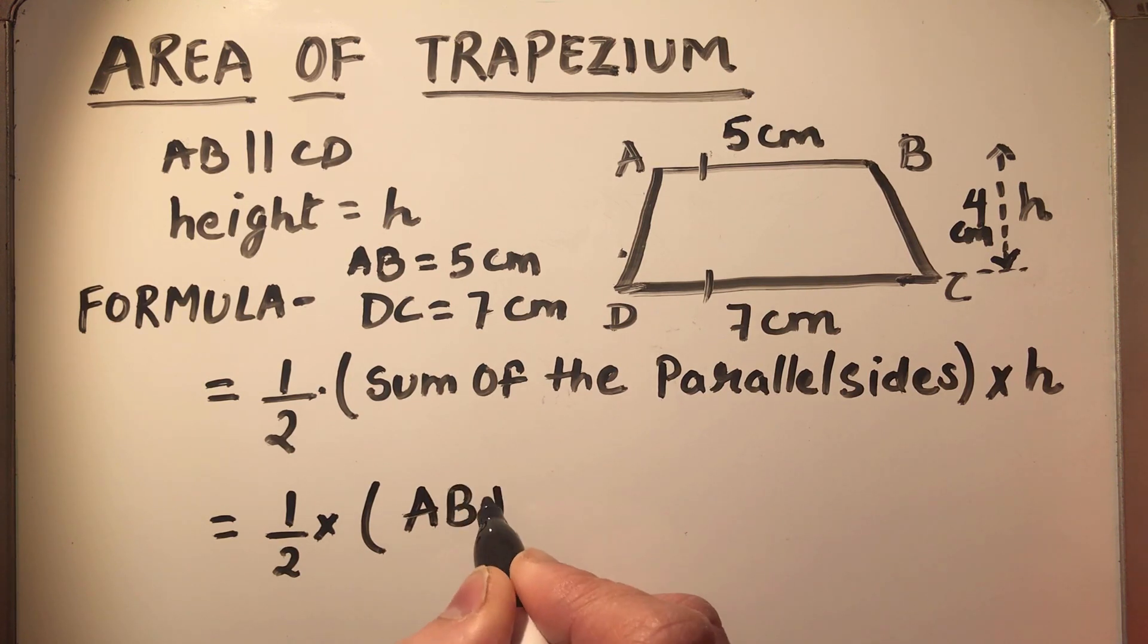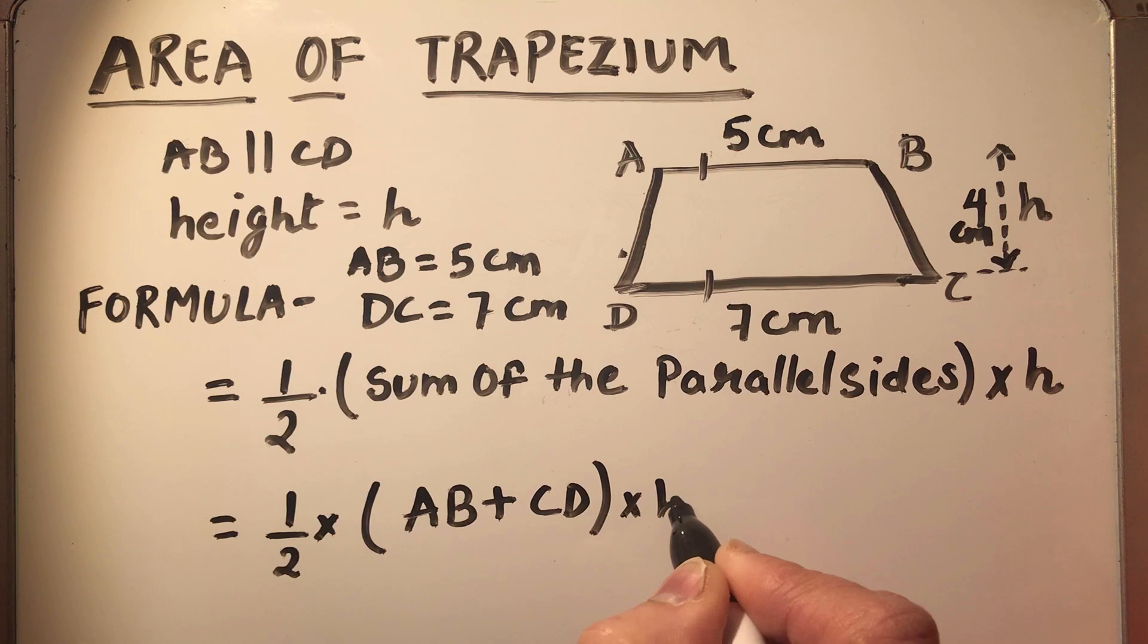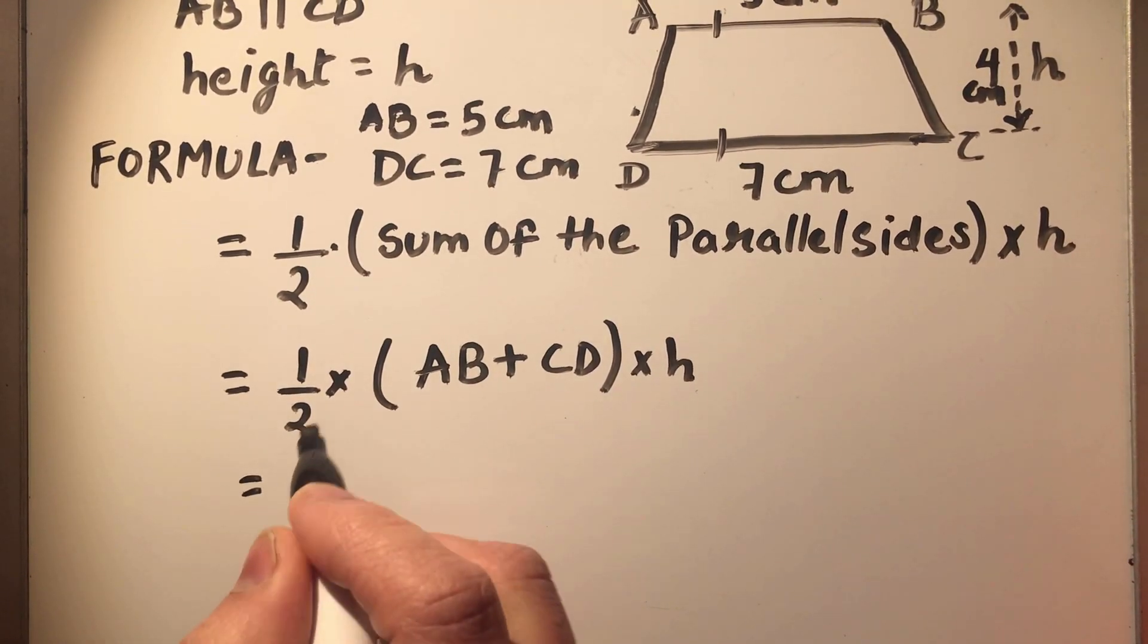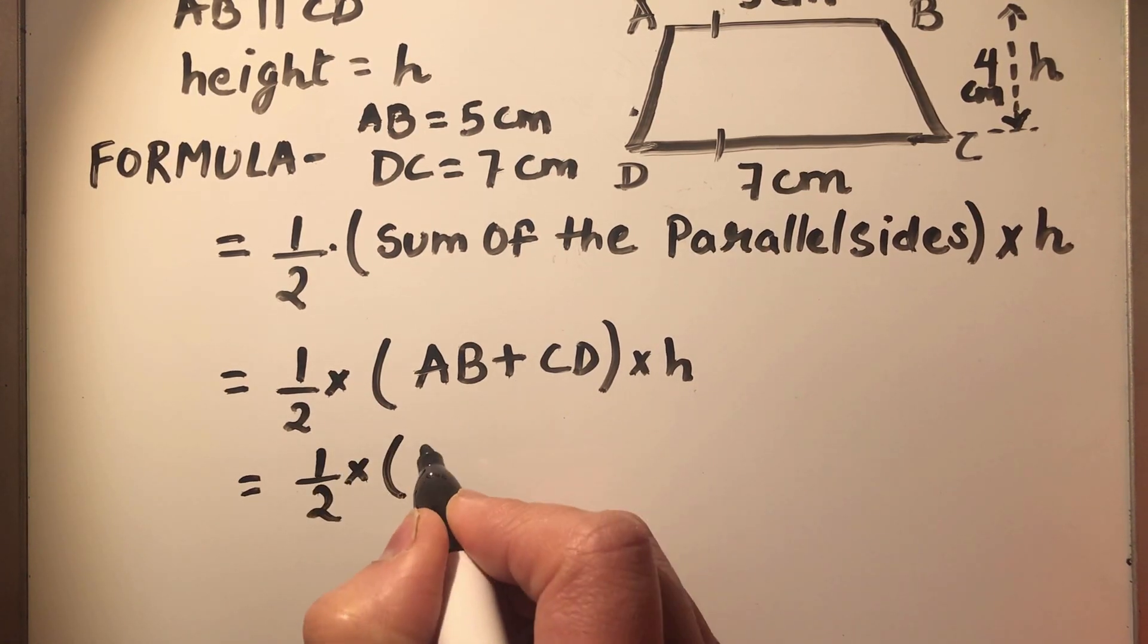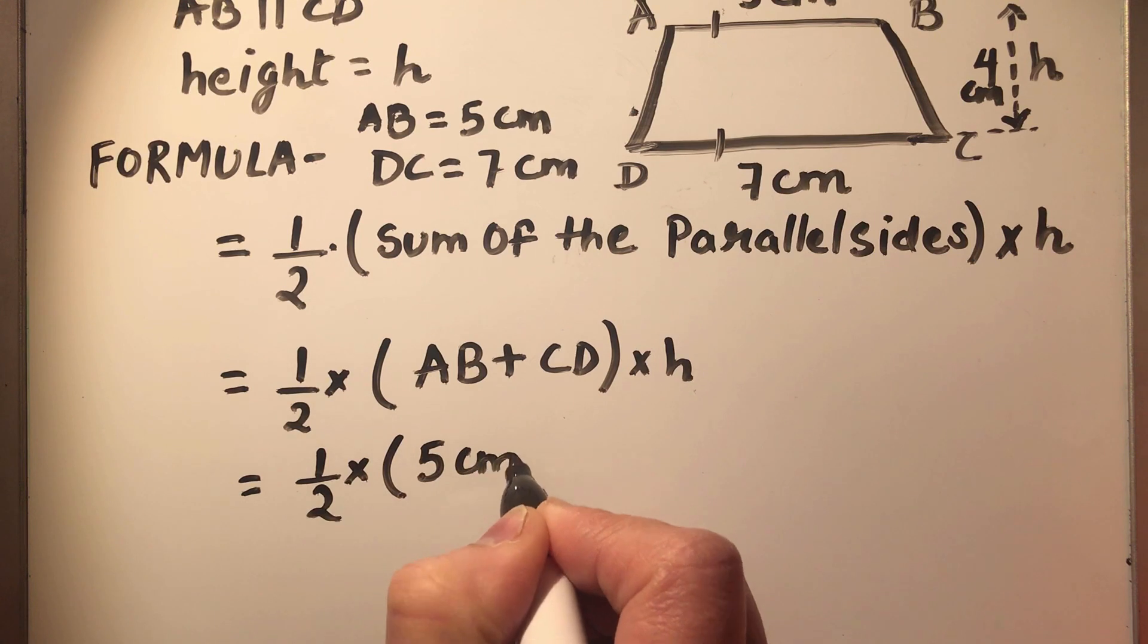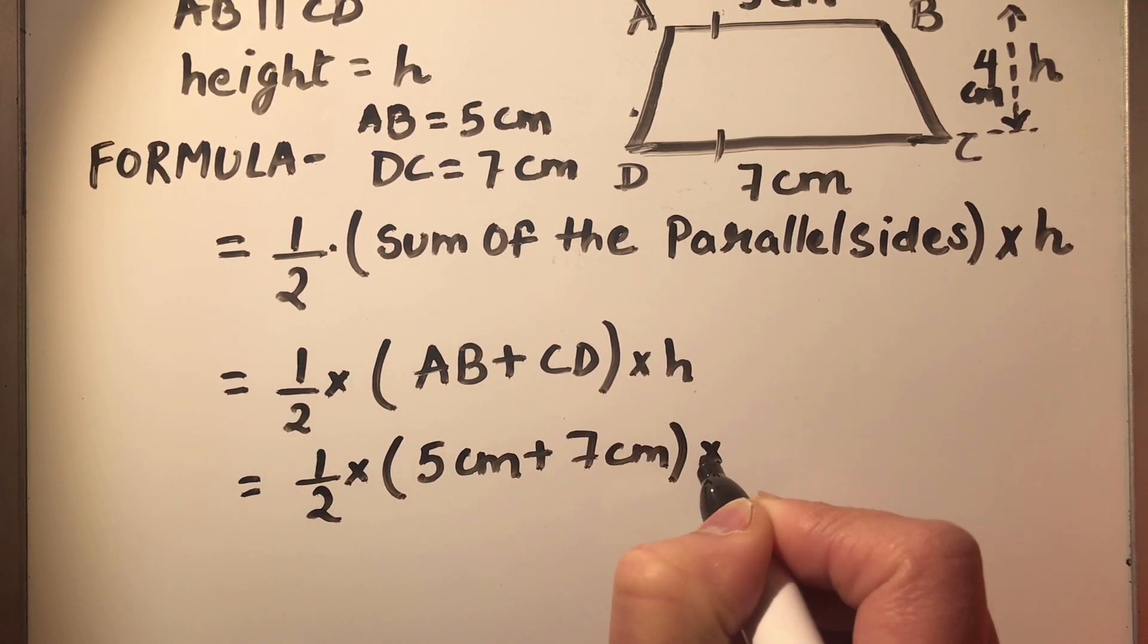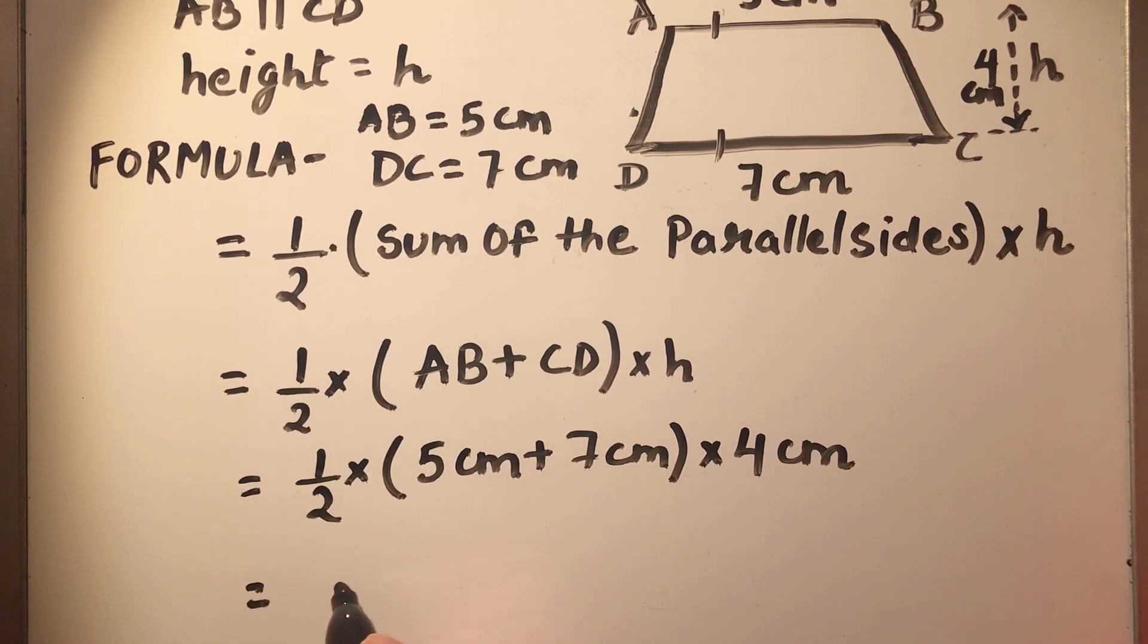Sum of the parallel sides means AB plus CD times h. So now we are going to put the values in the formula. Half times AB is 5 centimeters and CD is 7 centimeters times height is 4 centimeters.